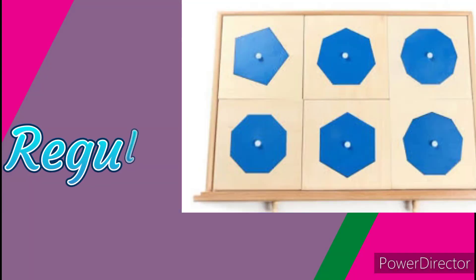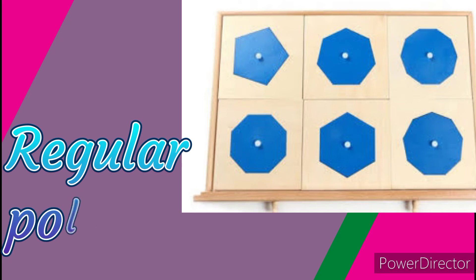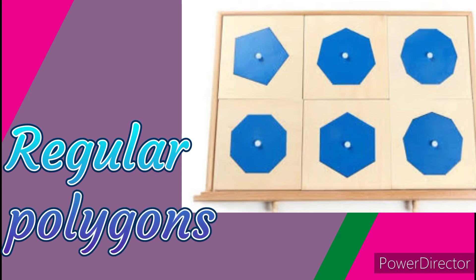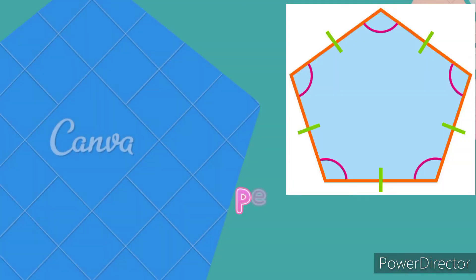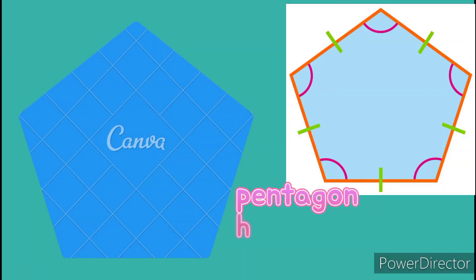When we say regular polygons, it simply means a polygon is called regular if it has equal sides and angles. We have so many polygons. First, pentagon.